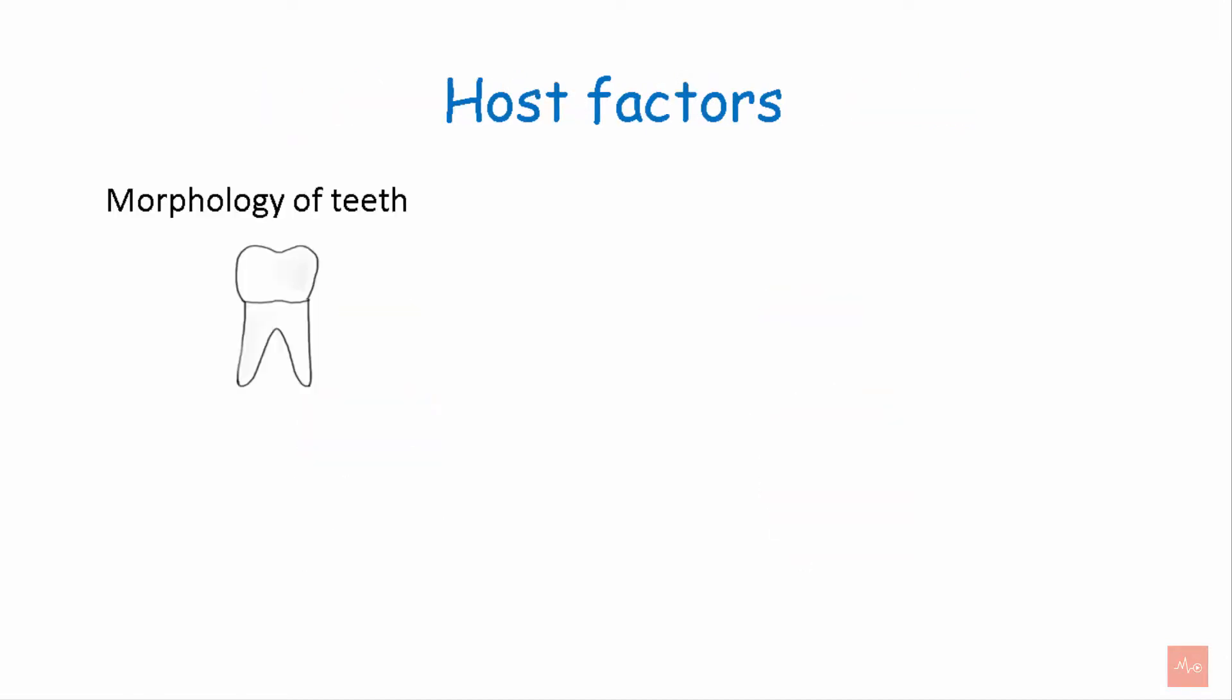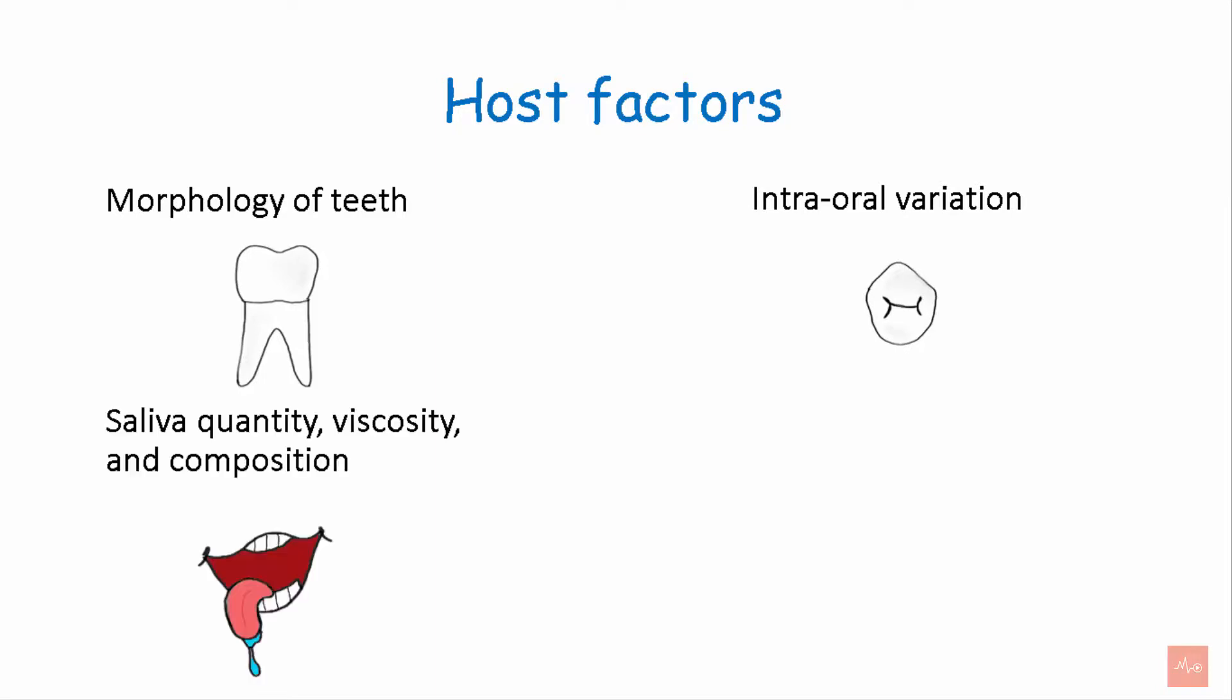Now what are the host factors? It includes the morphology of tooth, like what is the size or the shape of the tooth. Then the intraoral variations, like the pits and fissures. If there are deep fissures, the chances of dental caries is more. The quantity, viscosity, and composition of saliva. And the irregular arch form of the teeth. If the arch form is more irregular, the chances of dental caries will increase.